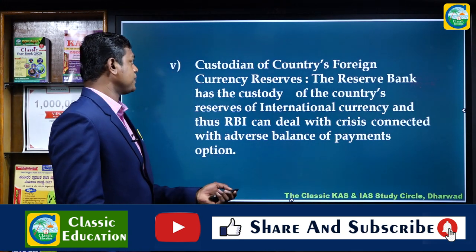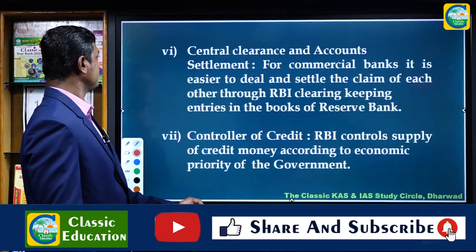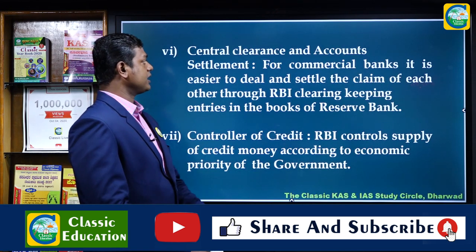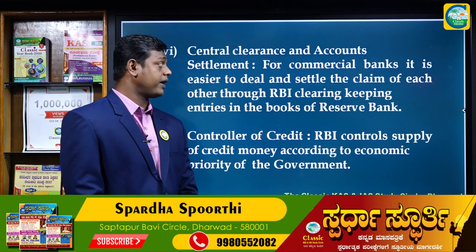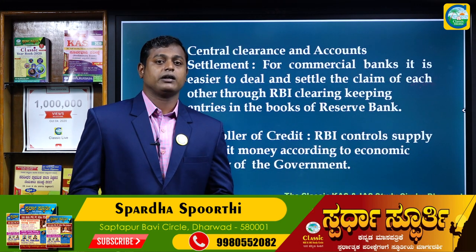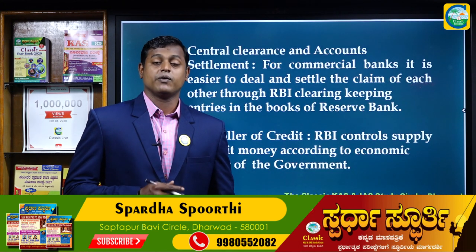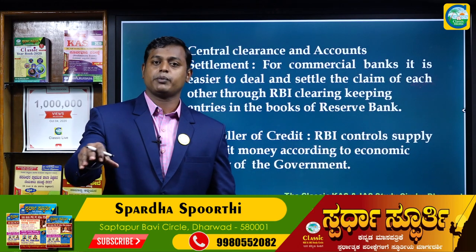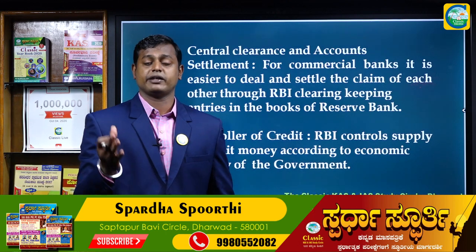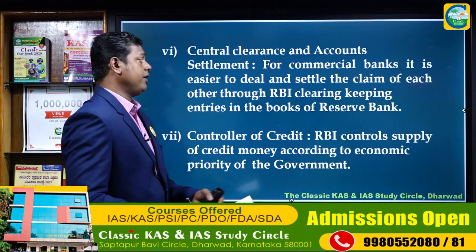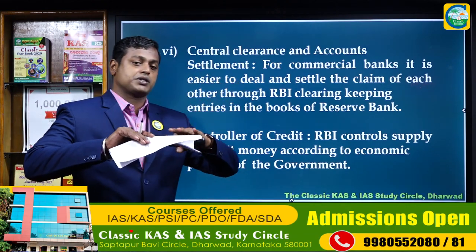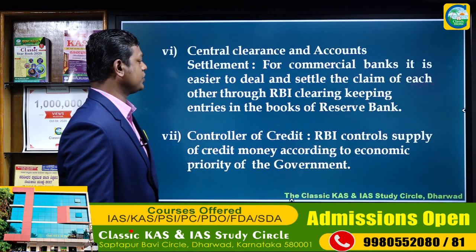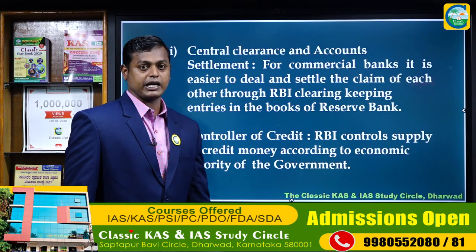The sixth main function is 'Central Clearance and Accounts Settlement.' All banks maintain their records. Just as account holders have passbooks, banks also maintain records in hard copy and soft copy. For commercial banks, it is easier to deal with, settle, and clear claims through RBI, which keeps entries in the books of the Reserve Bank.